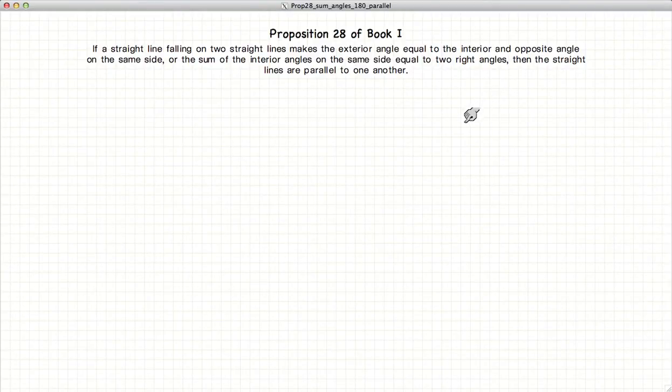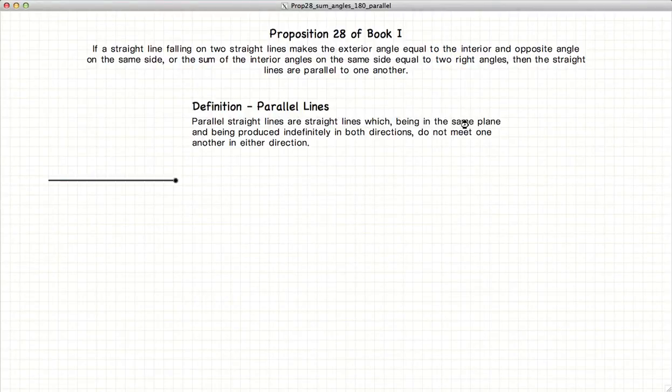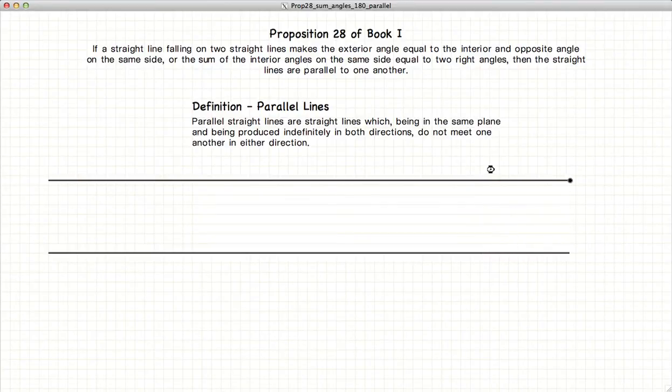But before we begin, let's remind ourselves of some definitions. First off, if we have two straight lines that if they are drawn in any direction continuously, forever and ever, they never meet, then these two lines are considered to be parallel lines.